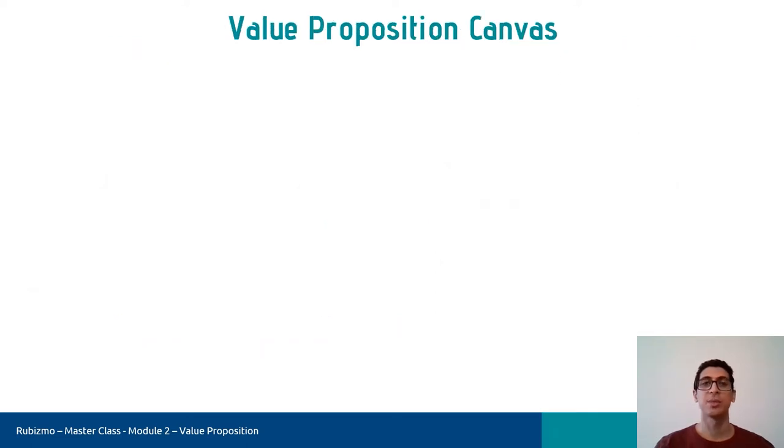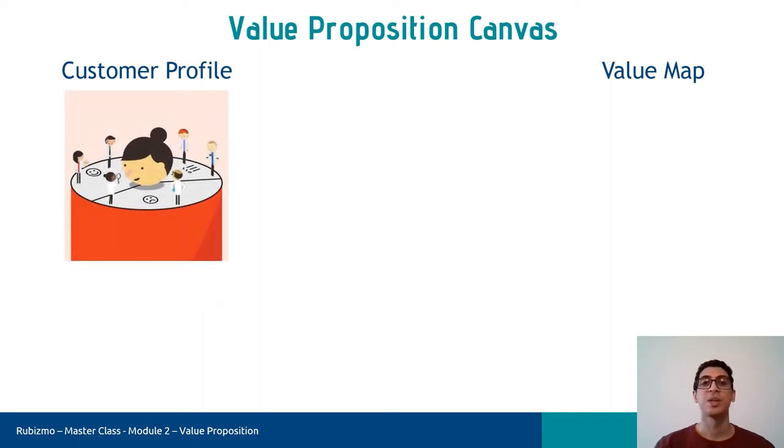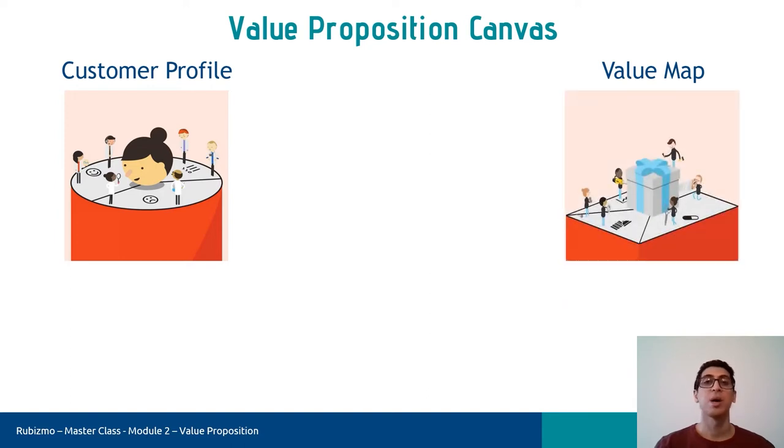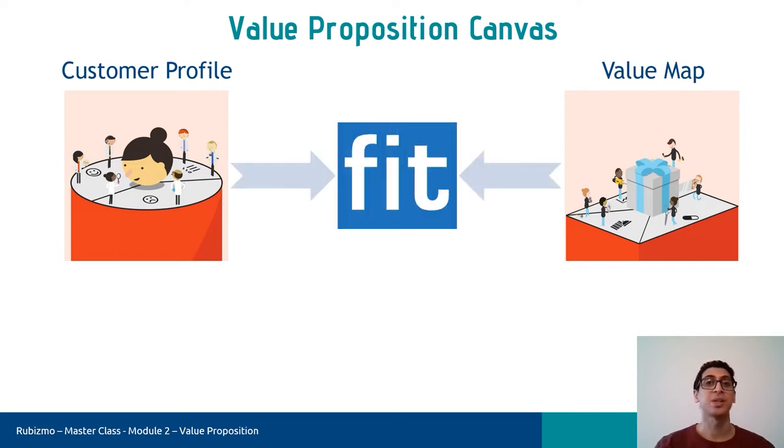Value proposition canvas has two sides. With the customer profile, we clarify our customer understanding, and with the value map, we describe how we intend to create value for that customer. And finally, we achieve fit between the two when one meets the other. Therefore, through the value map we can create value and then fit in with a set of customer features that we can see in the market.